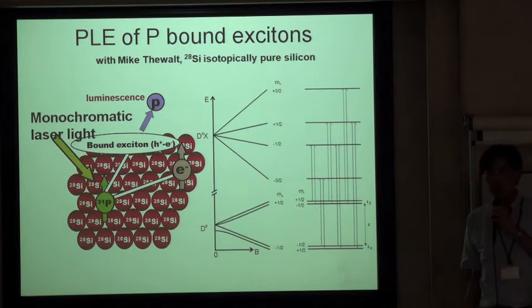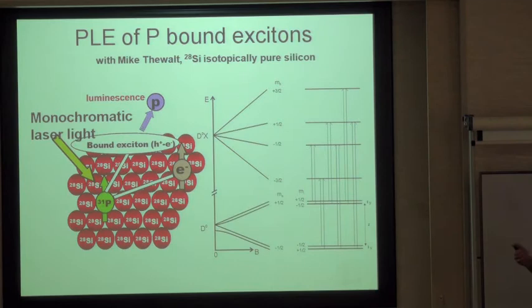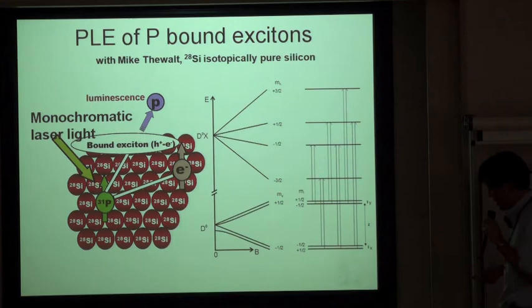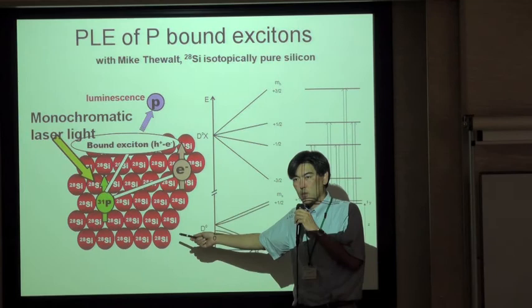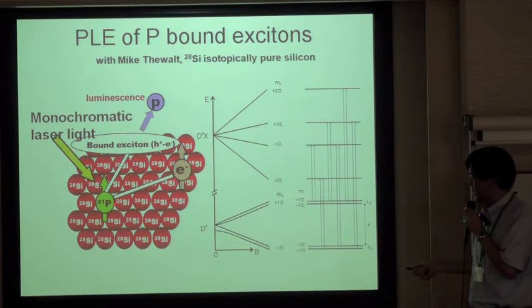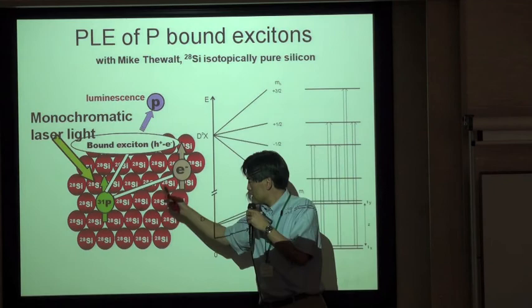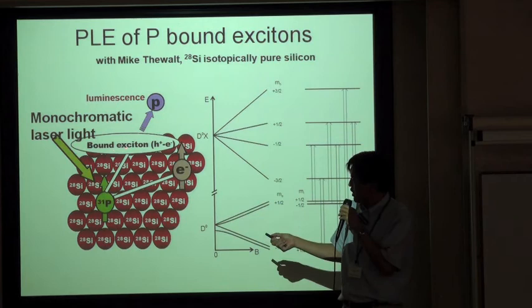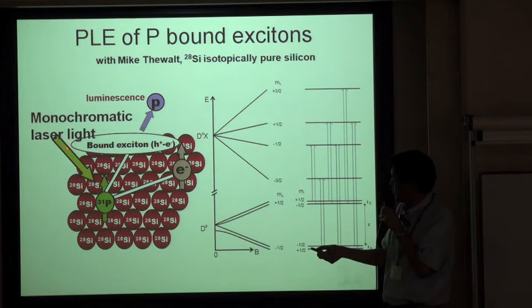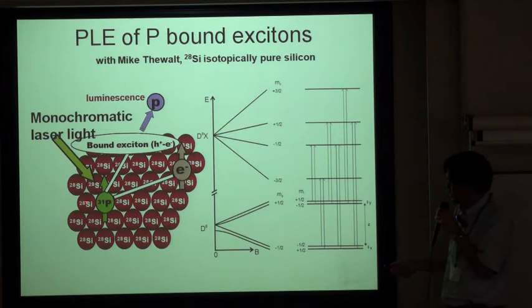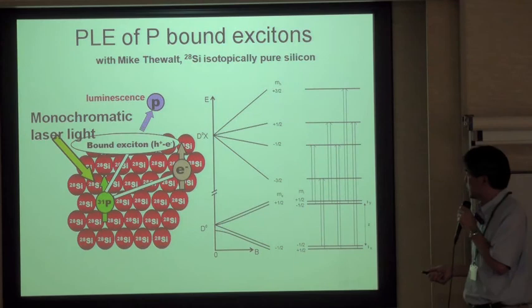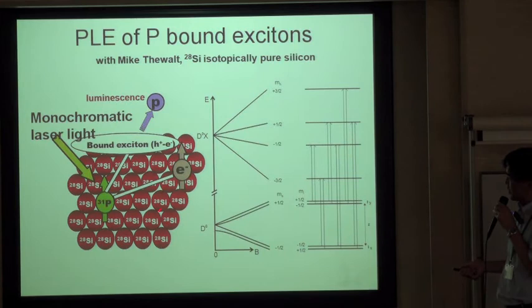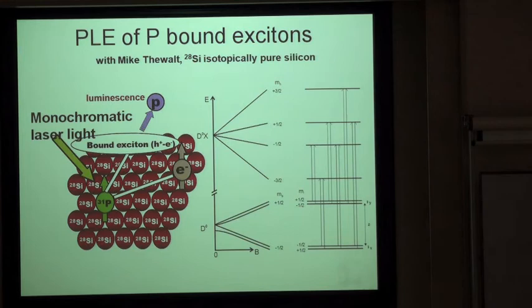Finally, I would like to talk about detection of nuclear spin states of phosphorus optically. We use silicon depleted of background 29Si — all 28Si — with phosphorus. At low temperature, phosphorus binds only one electron, just like hydrogen. But if we shine light, we can excite the phosphorus into a bound exciton state, where we have two electrons and one hole bound to phosphorus. We can then observe light coming out of this defect when the electron and hole recombine and the exciton annihilates.